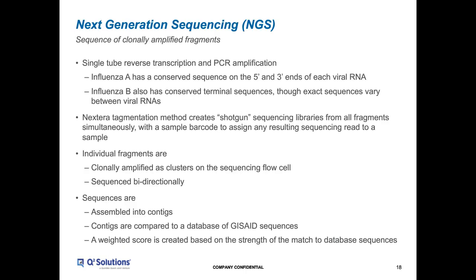With all of that in mind, the field has moved towards next-generation sequencing approaches. Within the NGS approach we decided to take, it's a single tube reaction. We take advantage of the conserved sequences on the five-prime and three-prime ends of each viral RNA. For influenza A, there's a common sequence on the five-prime and three-prime end of each segment. For influenza B there are some sequence differences between the different viral RNA segments, but these are essentially invariant between strains and subtypes. We use that information to target each of those molecules, creating rather large PCR products, and then take advantage of an NGS library preparation method called Nextera tagmentation to create a shotgun sequencing library from all those fragments simultaneously.